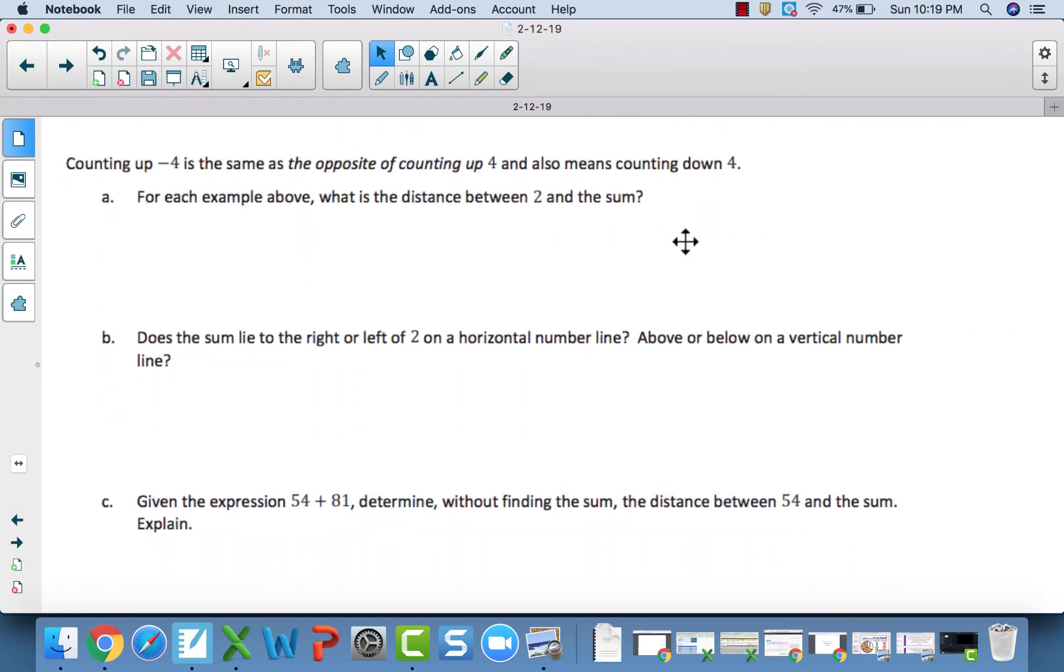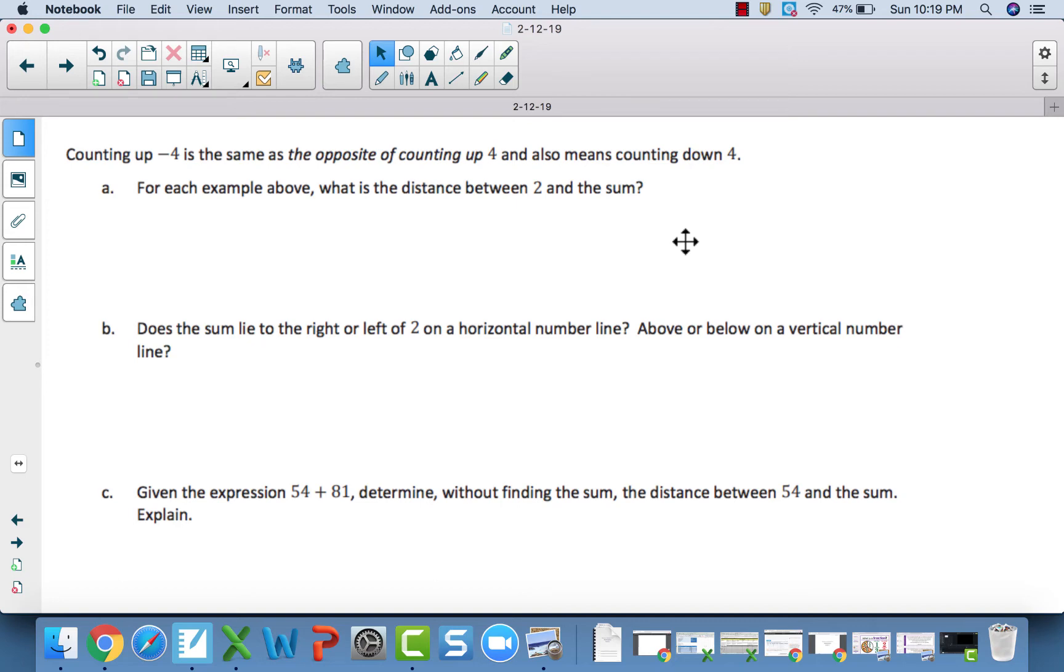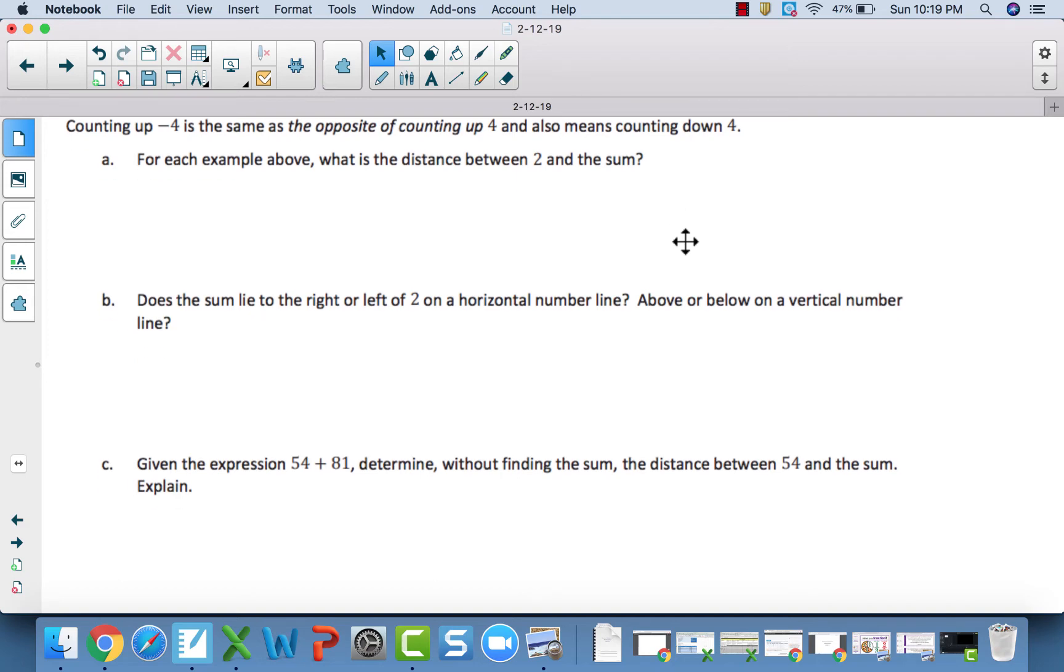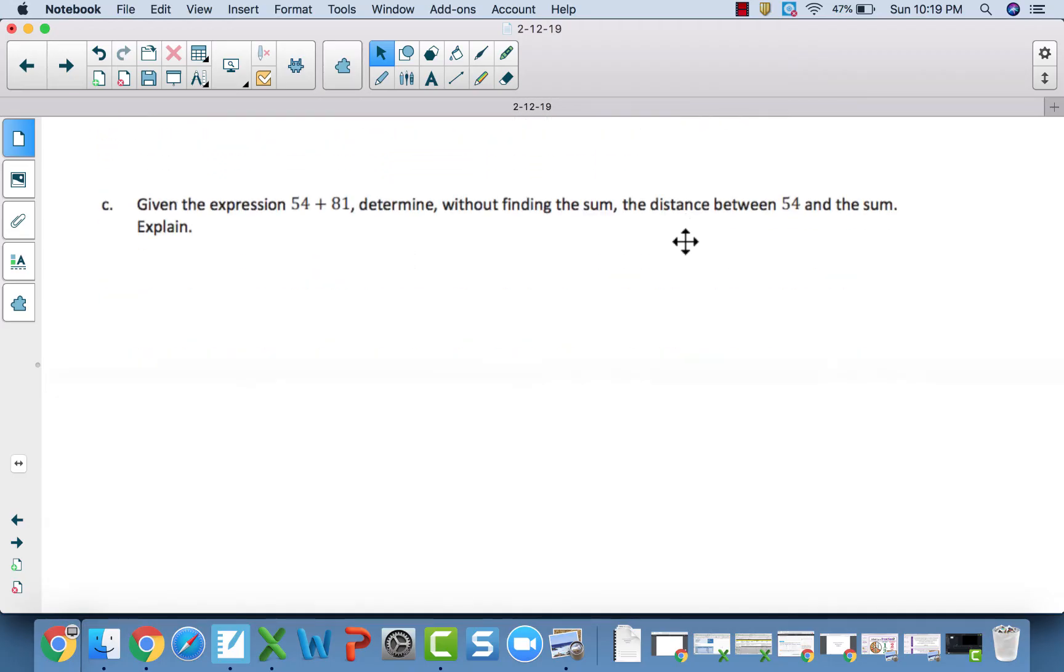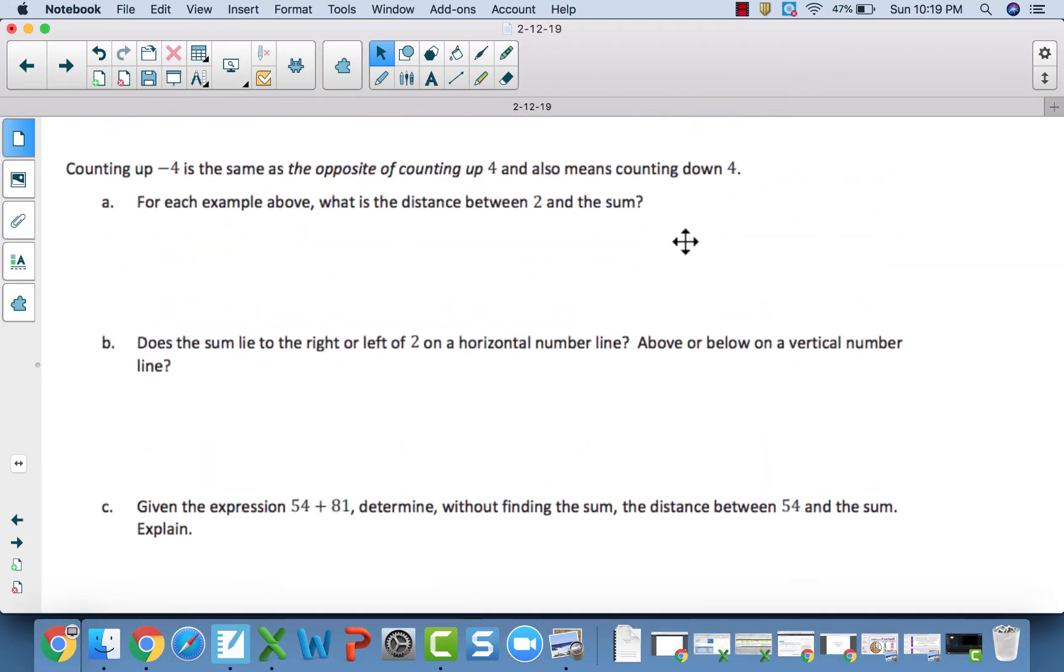So what I want you to do is go through, answer parts A through C, and then when you're done, come back and check the video. We will go over these three prior to moving to D through F. All right, for A, it says, for each example above, what is the distance between 2 and the sum? The distance, regardless, was always 4 units.